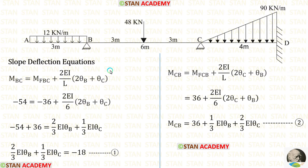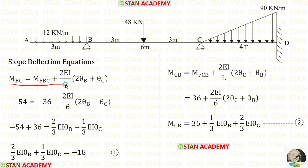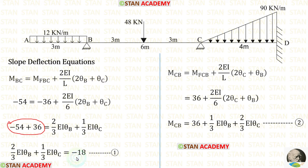Now let us make the slope deflection equations. No need to make the slope deflection equations in the overhanging span AB — only make the equations in spans BC and CD. First, let us make the slope deflection equations in span BC, applying the fixed end moments and the length of BC = 6 meters. Applying the first equilibrium equation where MBC = minus 54, and taking minus 36 to the left side, we get minus 18. This is our first equilibrium equation.